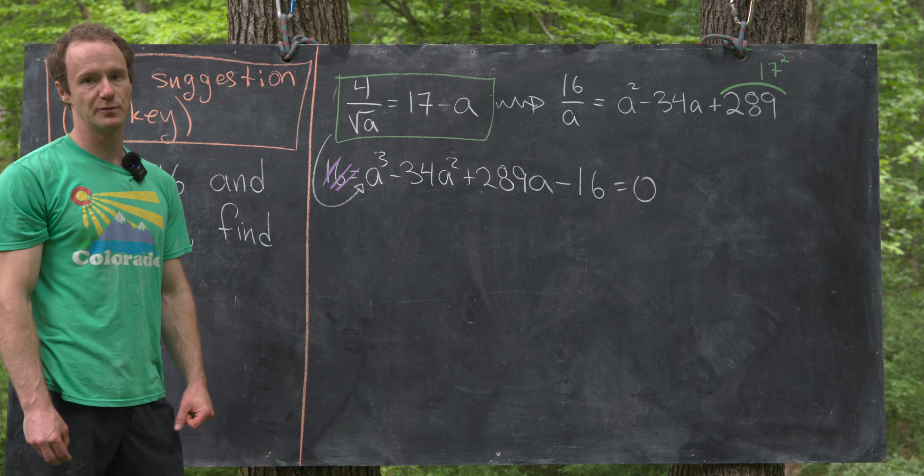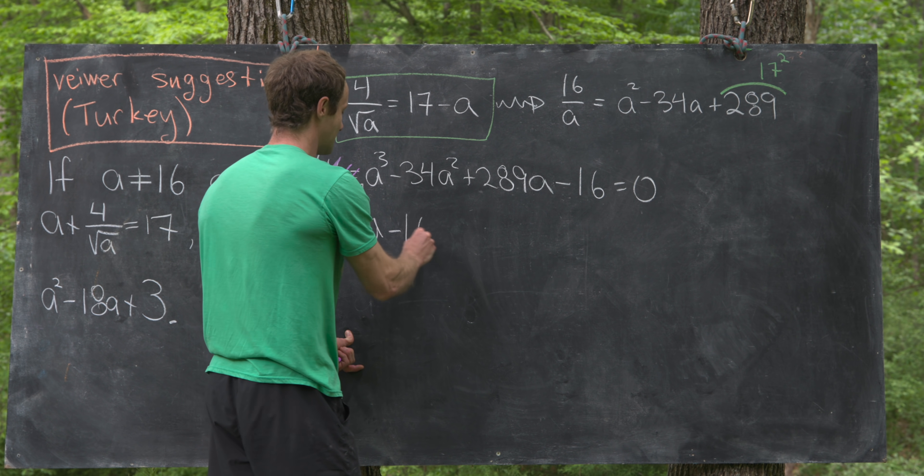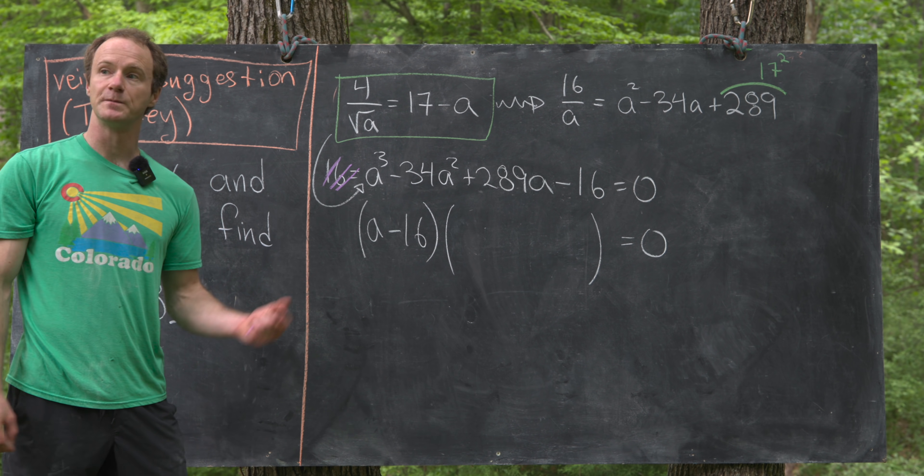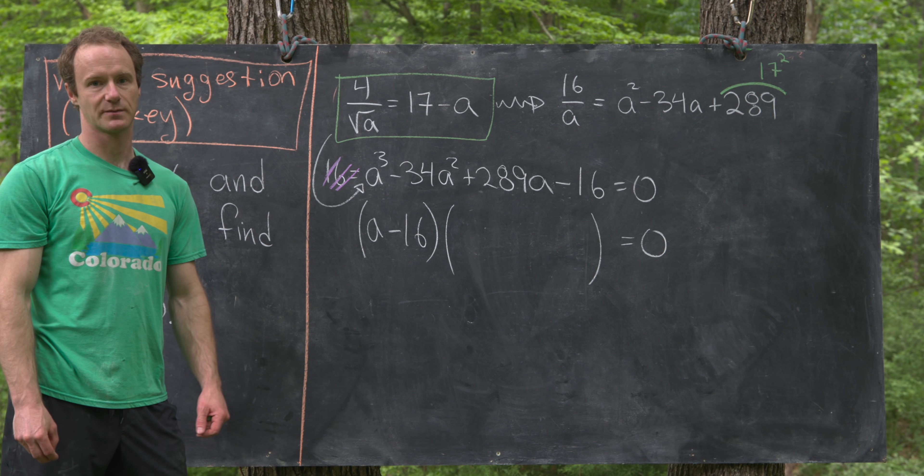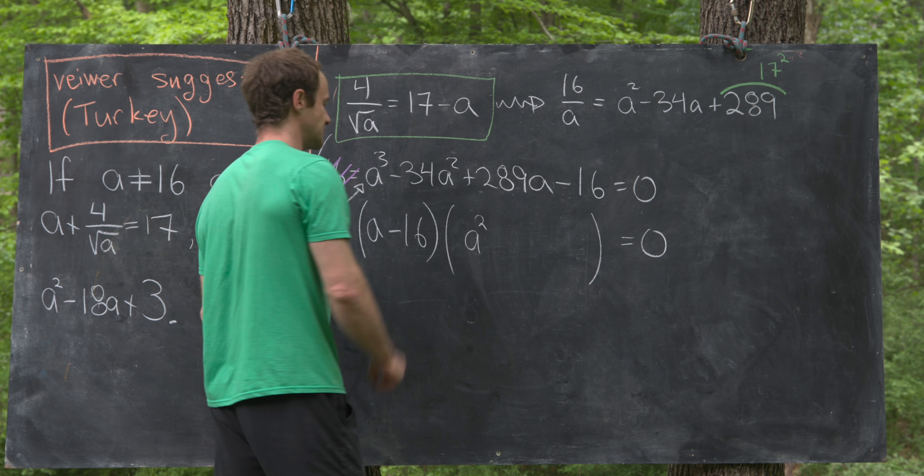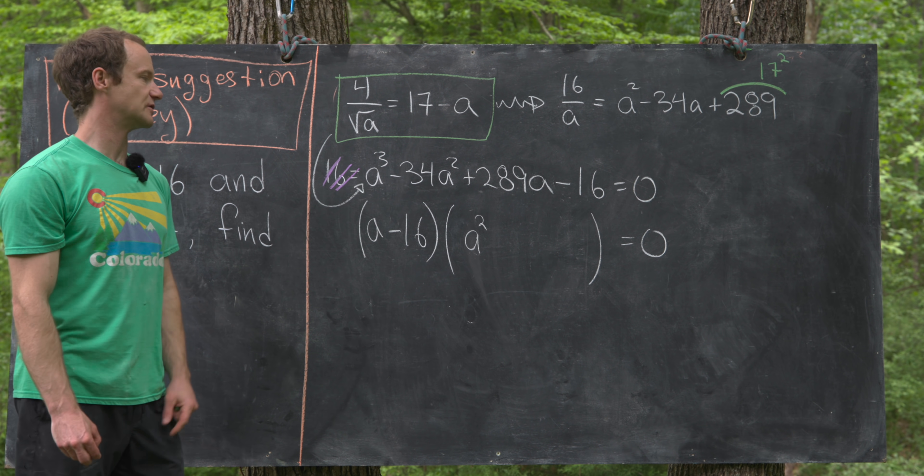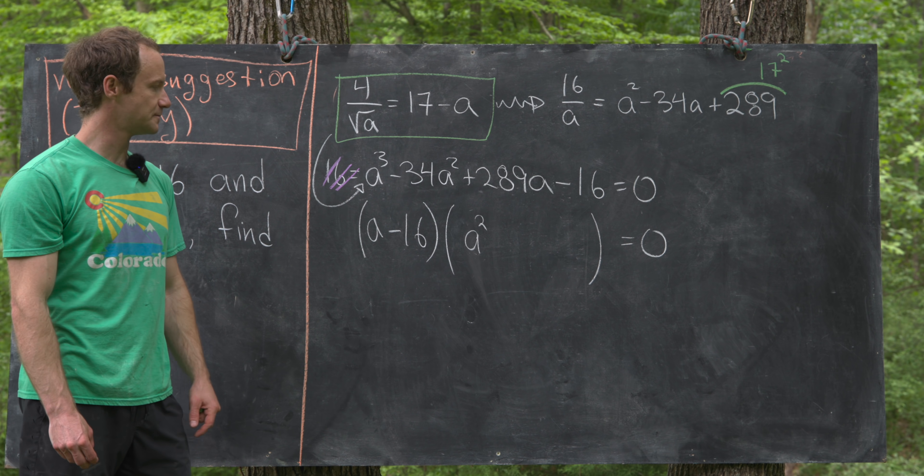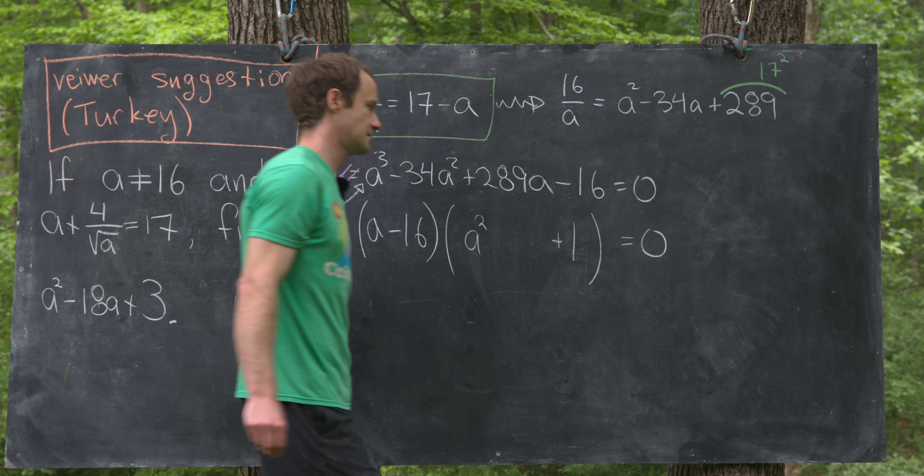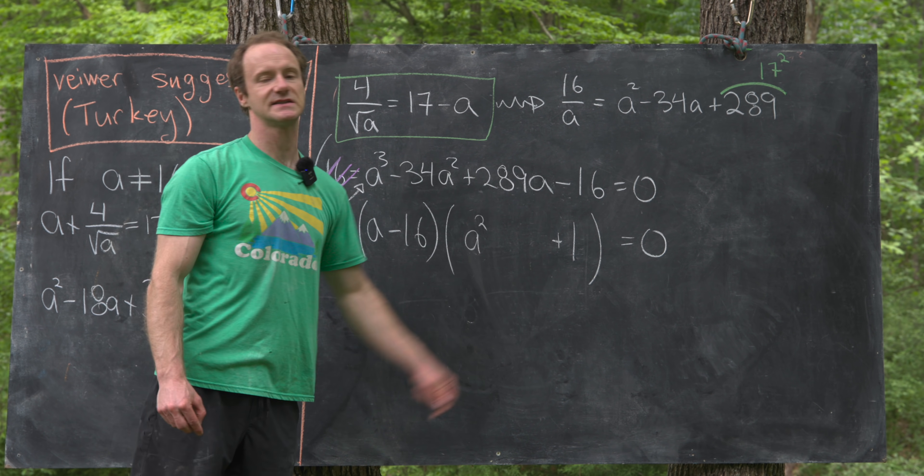But if 16 is a root of the cubic polynomial, that means we should be able to factor this as a minus 16 times some quadratic polynomial. We just have to figure out that quadratic polynomial. We need an a squared term. Notice that's going to be equal to 1, given the fact that we have a coefficient of 1 for this a cubed term. We need to figure out the constant term, but notice that's going to be plus 1, given the fact that we've got a minus 16 here and a minus 16 here.